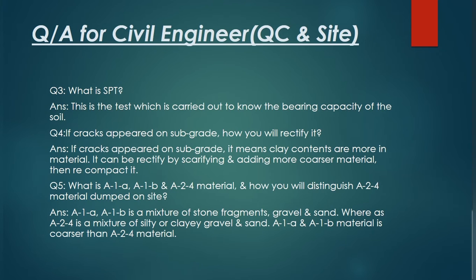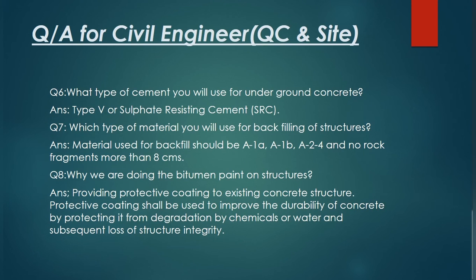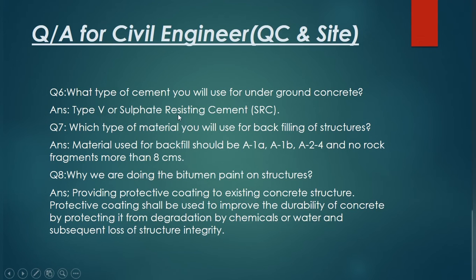Question number six: what type of cement will you use for underground concrete? Underground concrete is concrete which has contact with the soil. For that concrete, we will use Type P cement or Sulfate Resistant Cement (SRC). Sulfate Resistant Cement will be used for concrete which has contact with the soil.